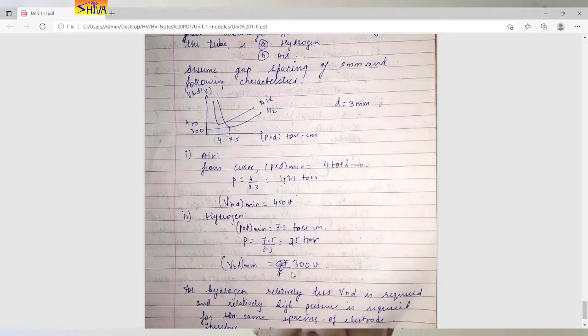Now compare the result. If we are filling air into the glow discharge tube, then we require voltage of 450 volts and we require pressure of 13.3 torr. If we replace this air by hydrogen, we require pressure of 25 torr that is relatively higher and breakdown voltage of 300 volts which is relatively lower.